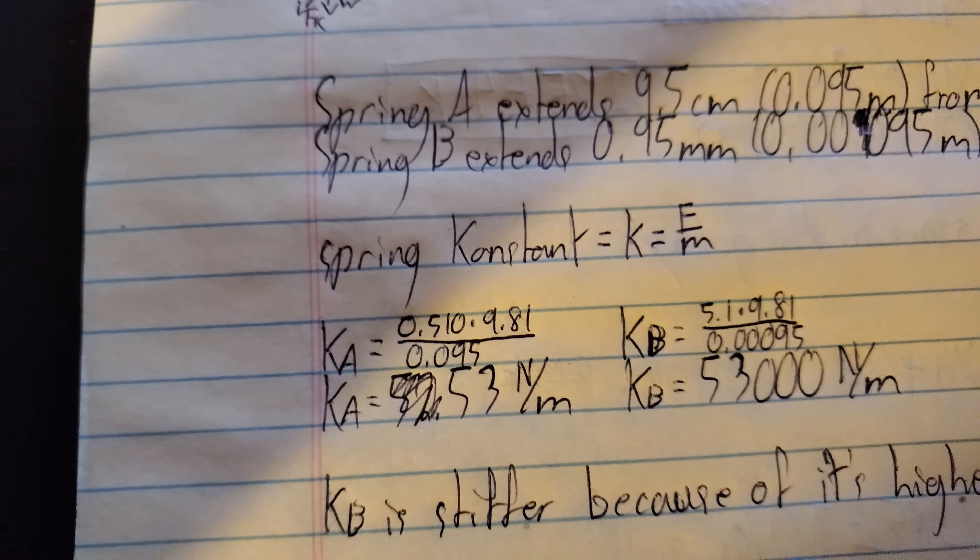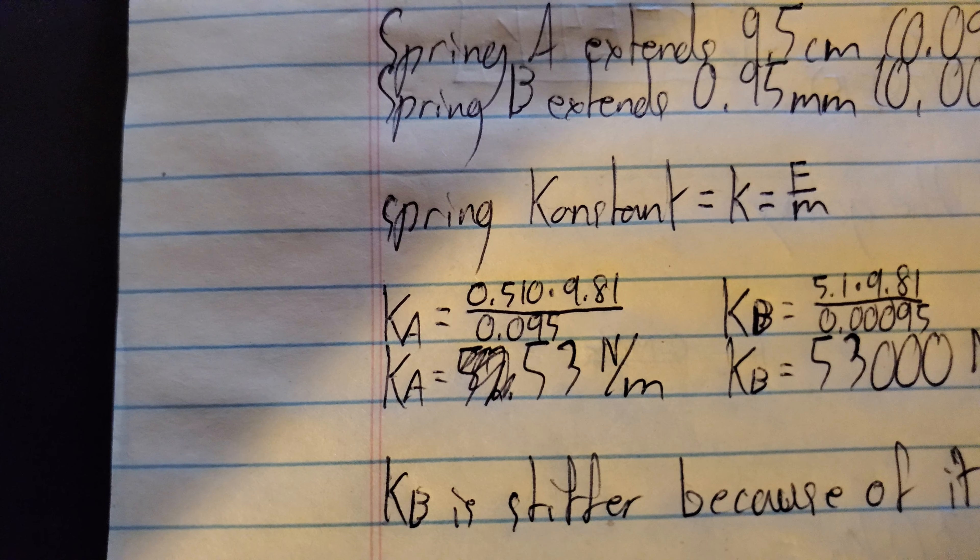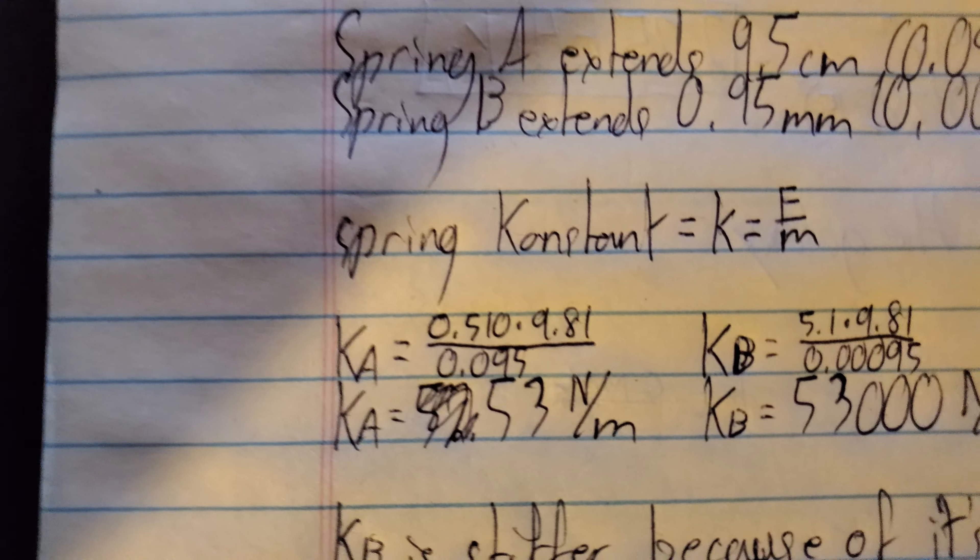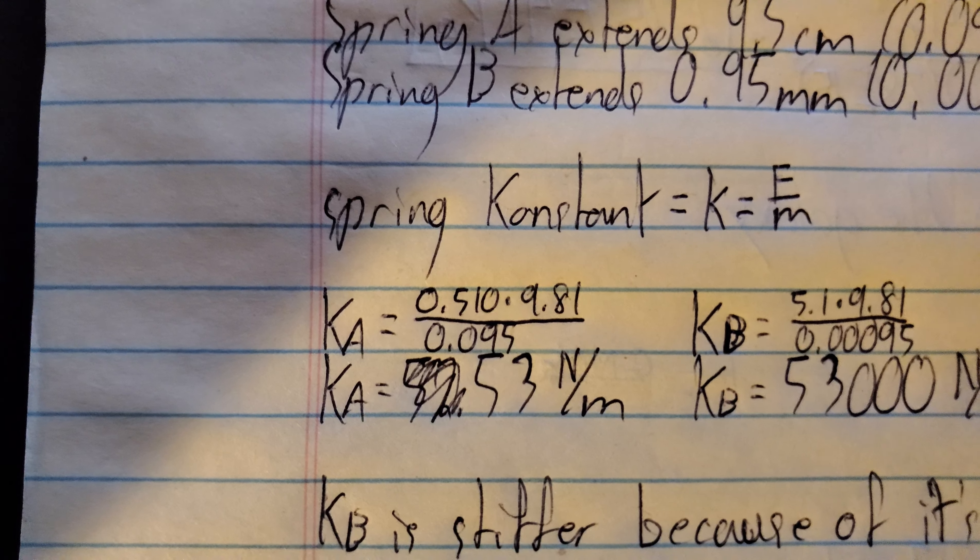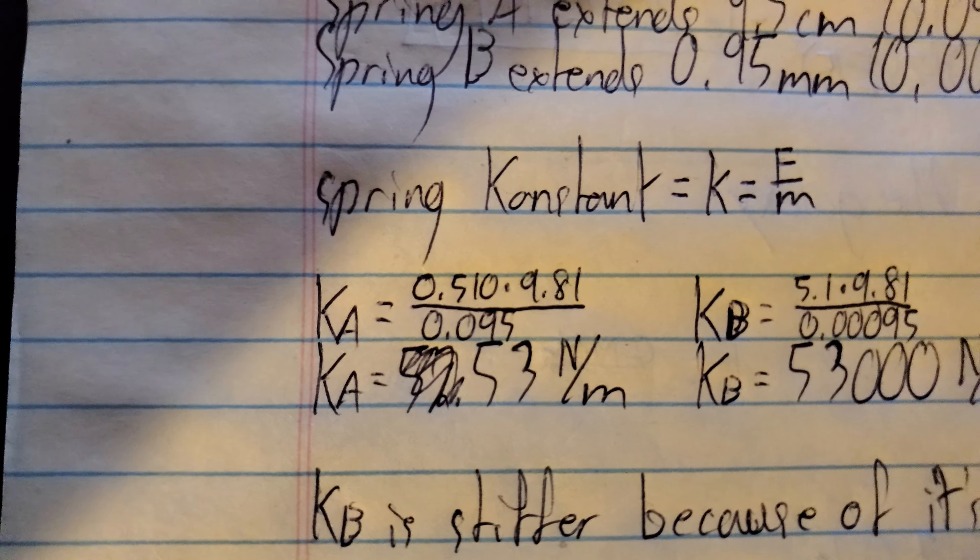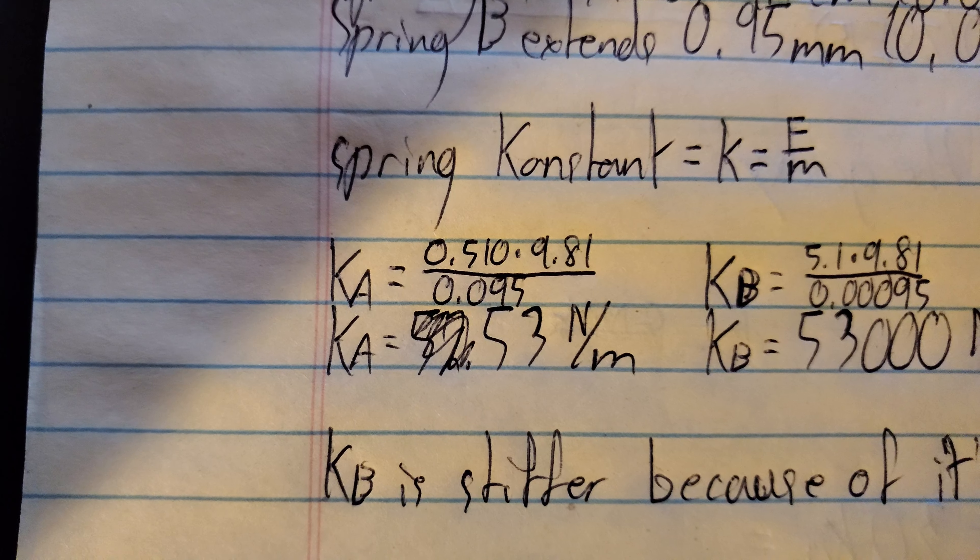So K sub A is going to be 0.510, that's the 510 grams, times 9.81, that's gravitational acceleration, divided by the distance that it extends, that's the 9.5 centimeters.